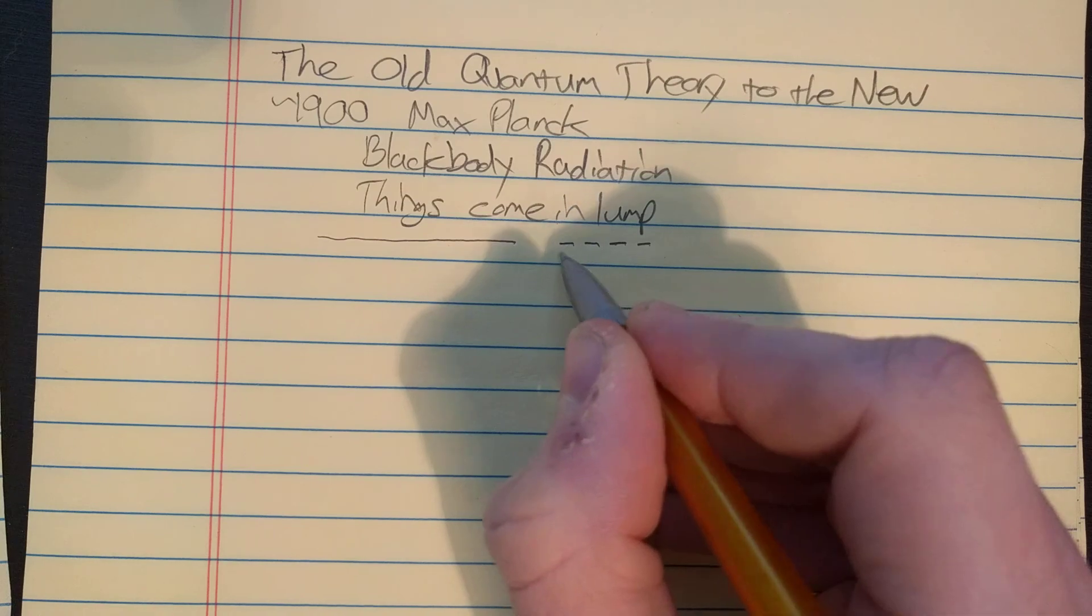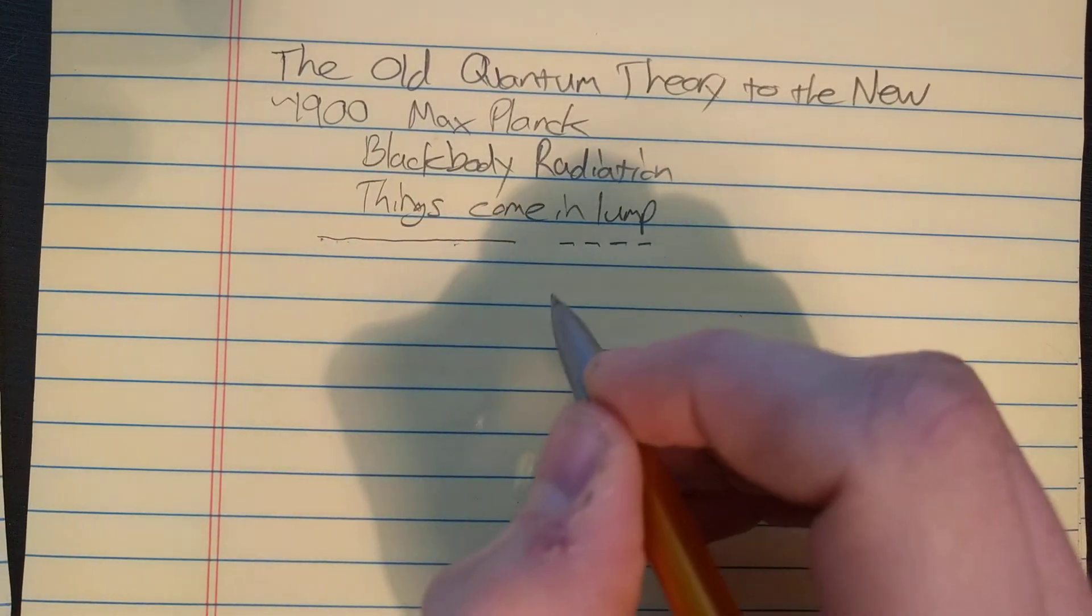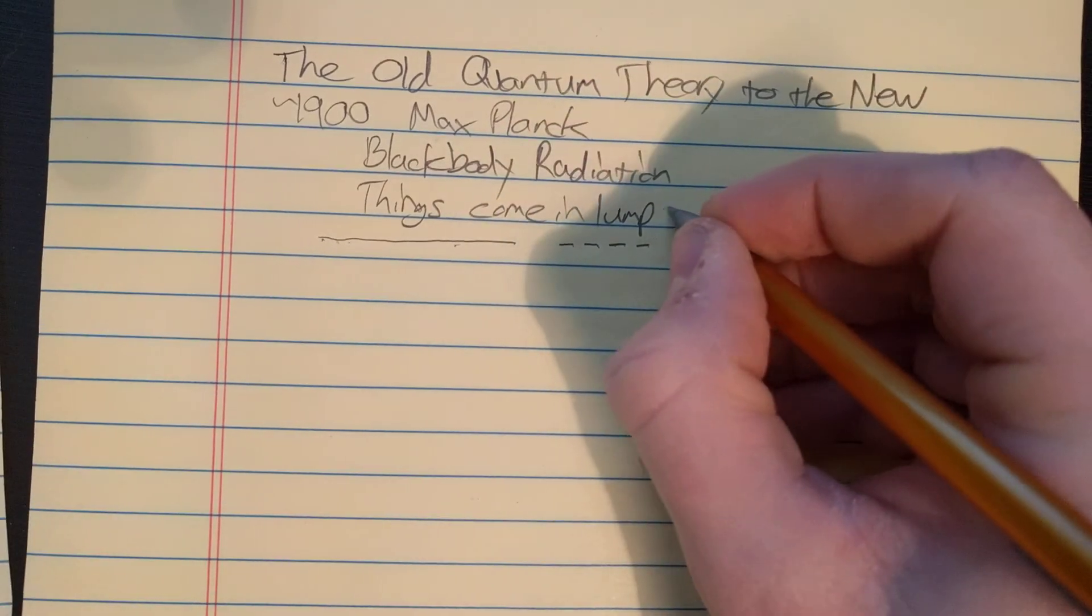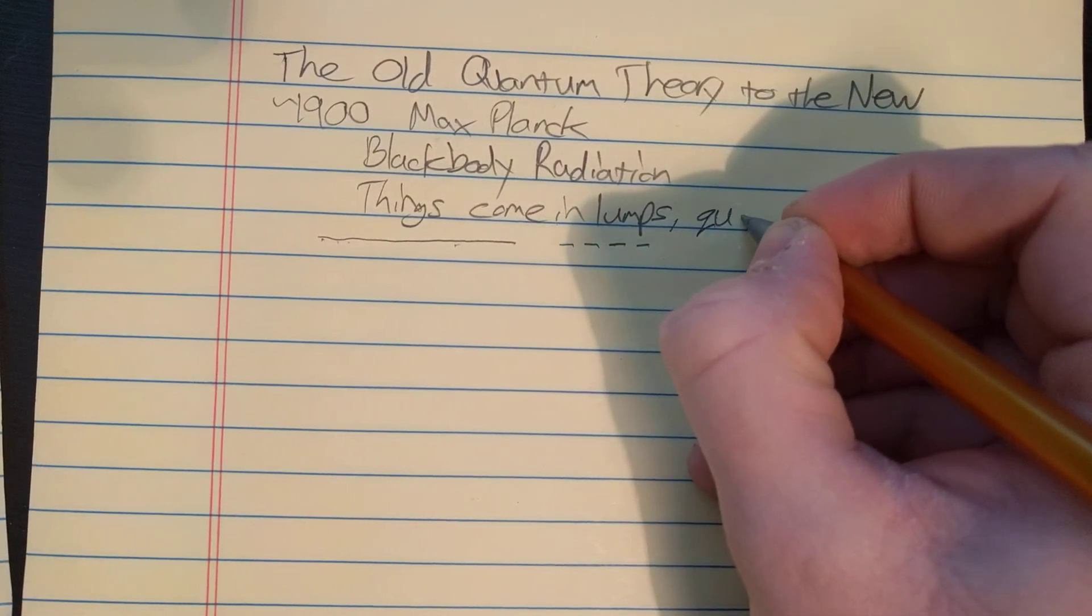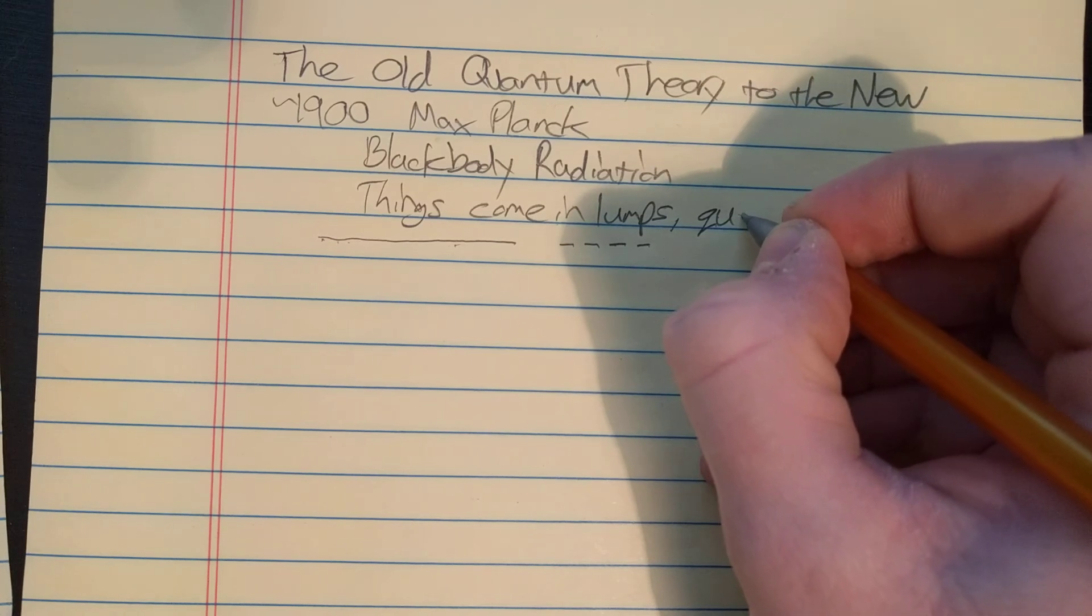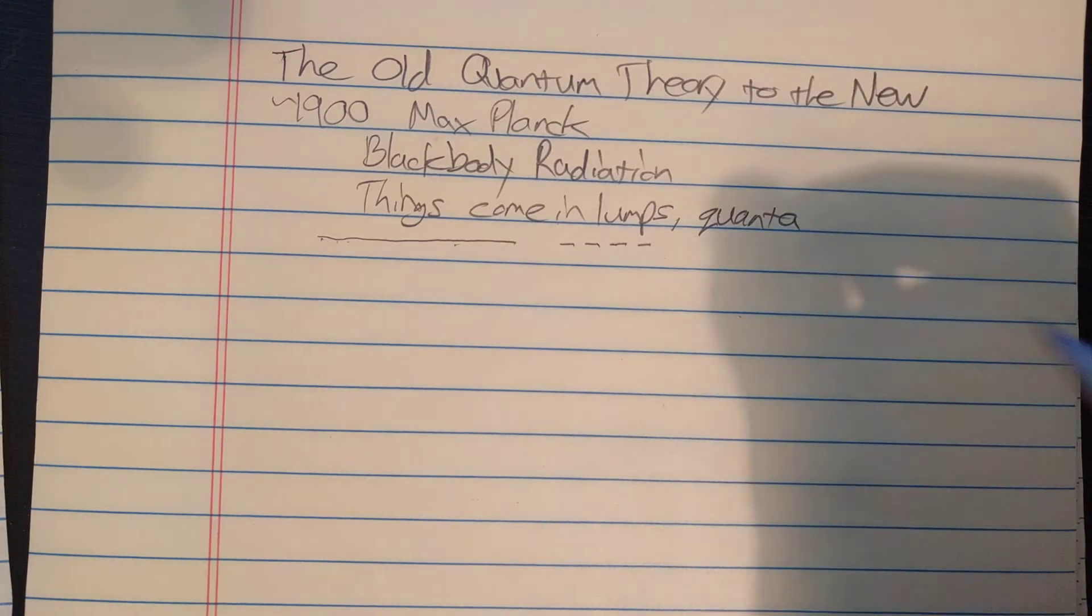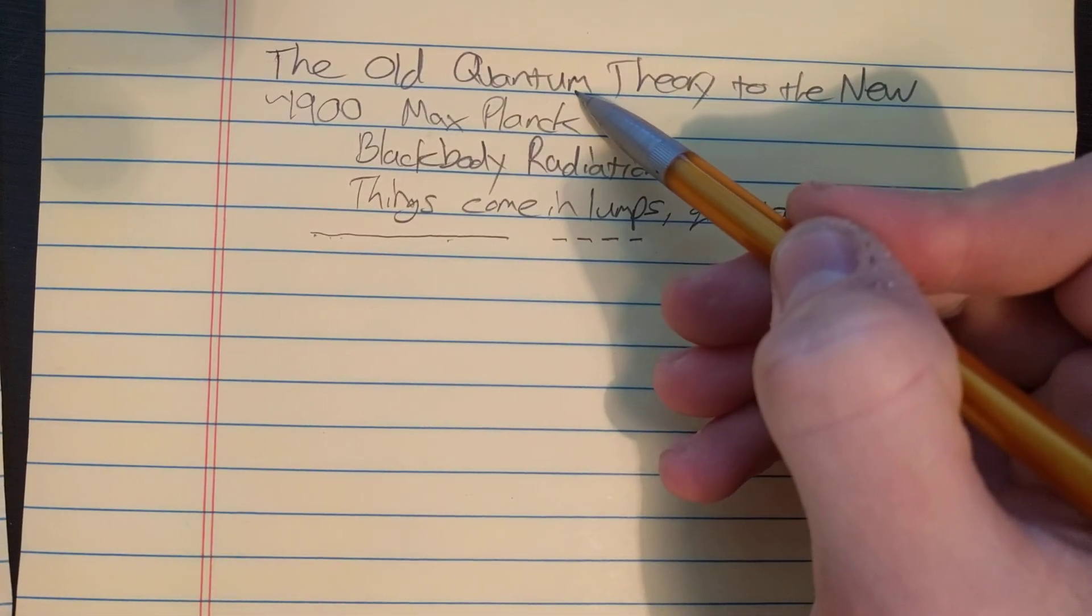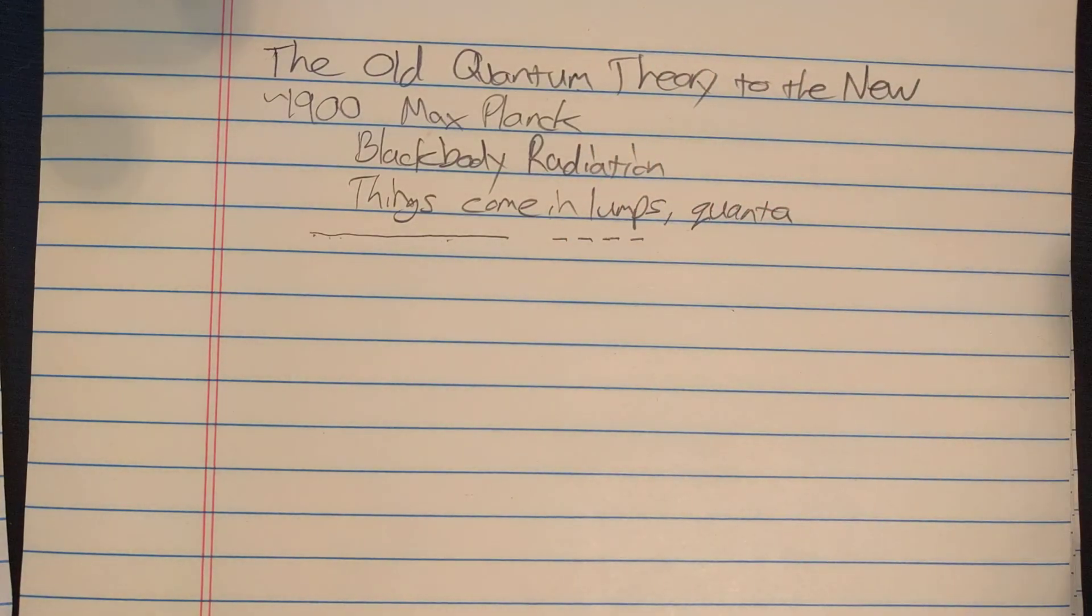He said things come in lumps or the lumps. Another name for lumps is quanta. One quanta is a quantum, and that's where we get the name quantum theory or quantum mechanics. It's the theory of things coming in lumps.